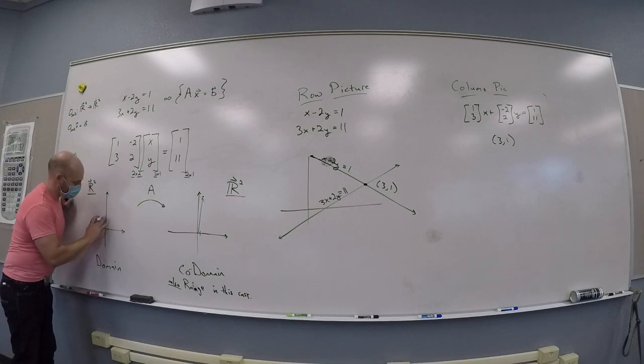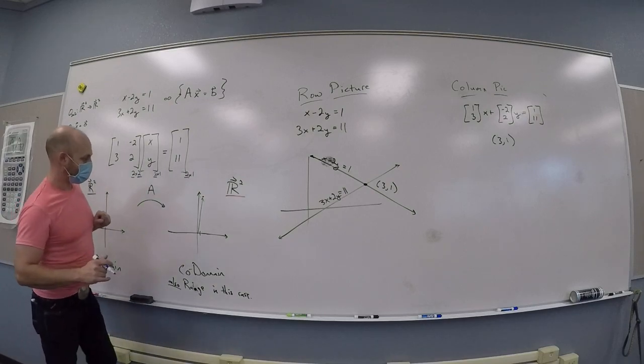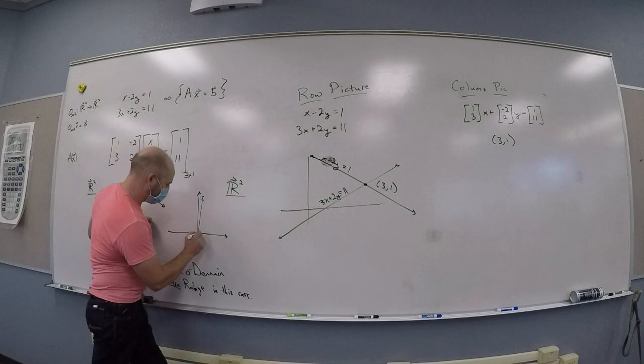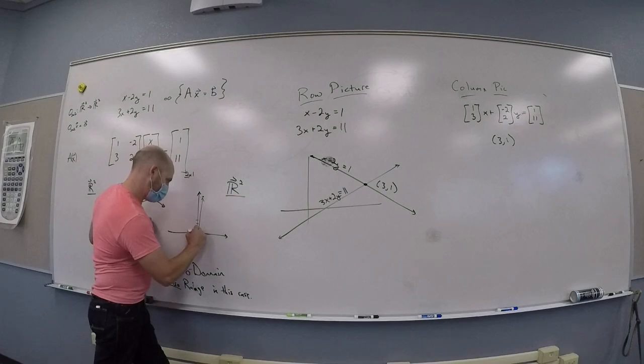Yeah, let me draw them in the codomain where it makes more sense. So (1, 3) is this vector here.